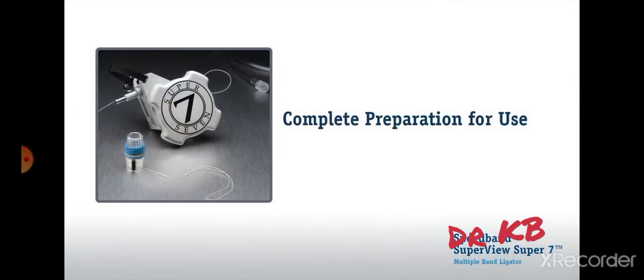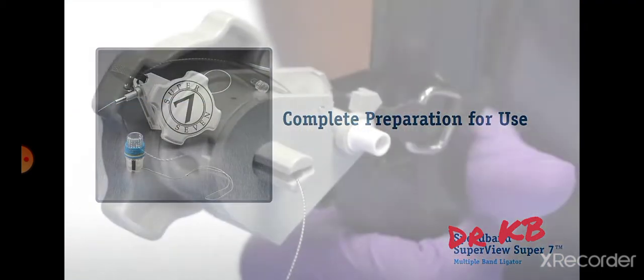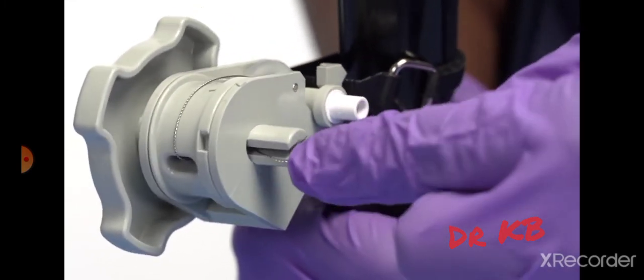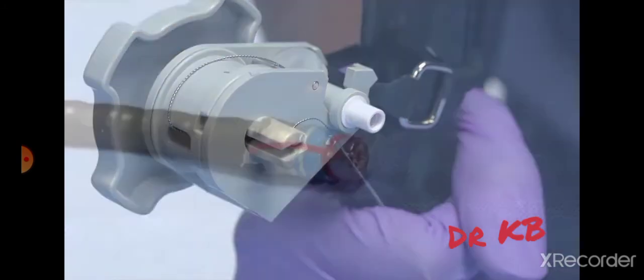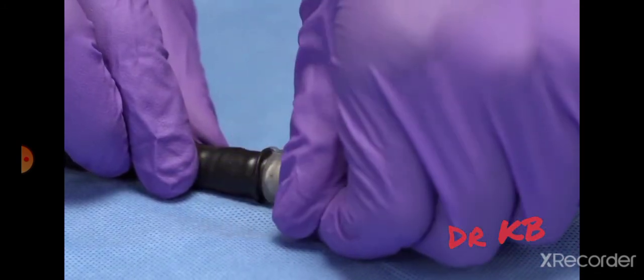Complete preparation for use. Grasp the tripwire and retract to remove the slack. Then lock down by pulling across the narrow slot. Do not over-tighten. Carefully remove the shrink wrap by hand.